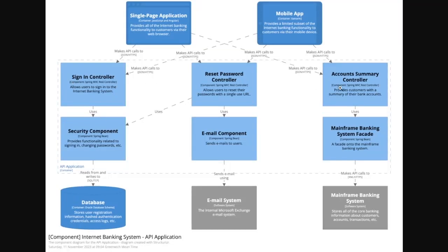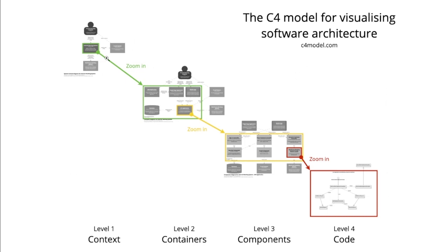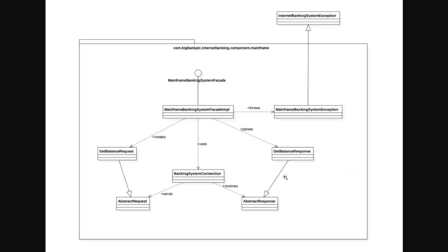We break down that into the API call container's components. In that container, we have all these components that make the API calls — sign-in components, reset password components, and more. You can see in the diagram we have a single page container, mobile container, database container, and the API container is expanded to show its components. From the context, a detail of the application is broken down to containers in level 2, then to components in level 3, and from level 3, the component is broken down to code, illustrated with a class diagram showing details and classes that interface with each other.